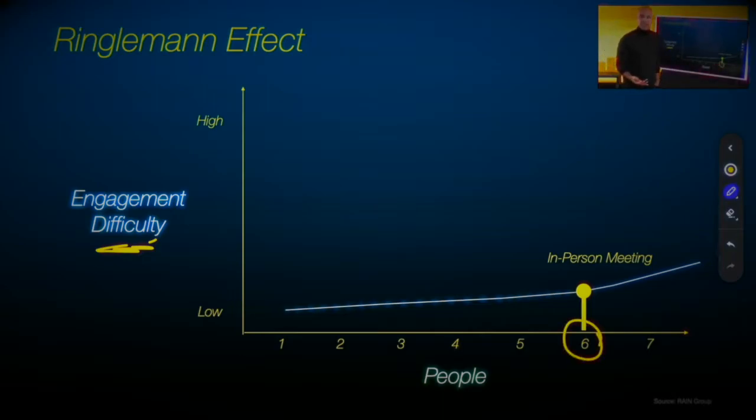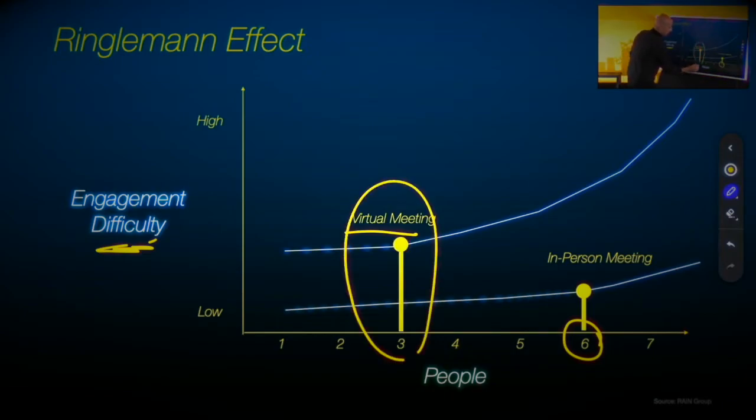Now the question is, what is it in virtual time? And what they found, that after six, it gets real difficult. Notice difficulty increases, but notice what happens in a virtual meeting. That number's more like three. So really, this is your ideal number for a virtual meeting.